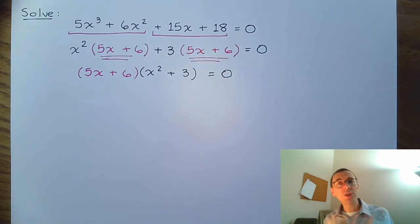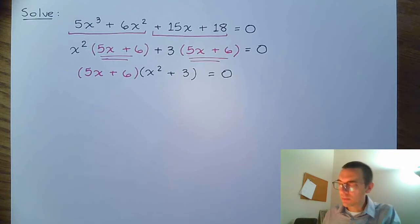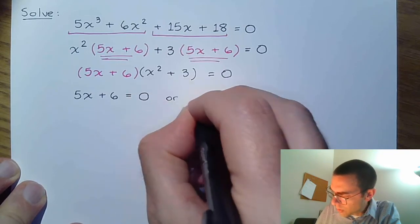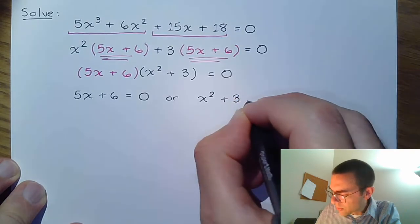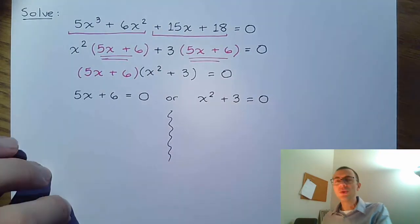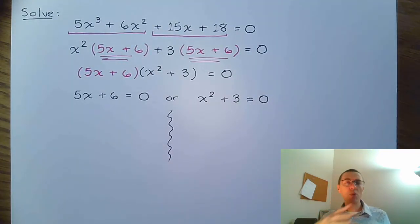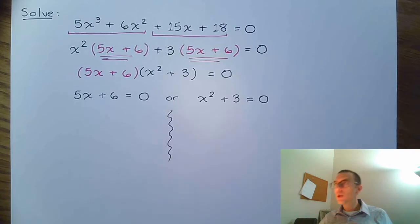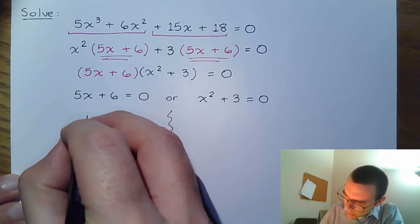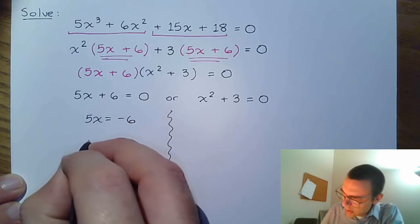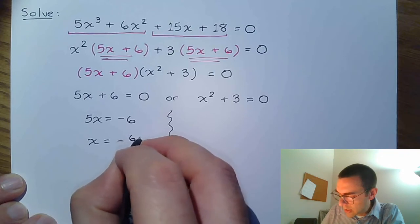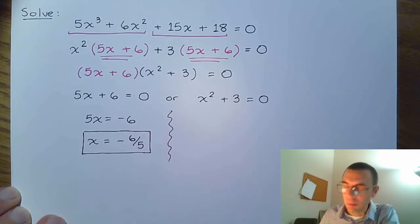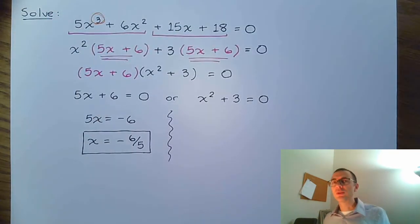We factor so we can use the zero factor theorem — take each factor and set it equal to zero. So 5x plus 6 equals 0, or x squared plus 3 equals 0. The first gives us a linear equation: subtract 6 to get 5x equals negative 6, then divide by 5 to get x equals negative 6 over 5. That's one solution, but we were expecting three solutions since the original equation had degree three. The other two come from the quadratic factor x squared plus 3 equals 0.